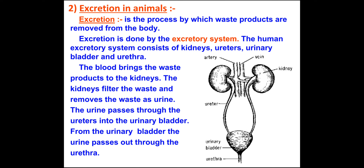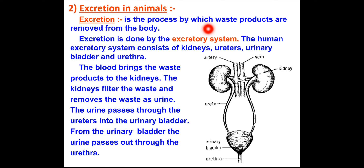Now, excretion in animals. Excretion is one of the important processes in animals. Simply, excretion is the process by which waste products — that is, unwanted products — are removed from the body. In our body there are unwanted products which our body doesn't want, and those products are removed by the process called excretion. There are some organs which help to excrete all these waste materials.